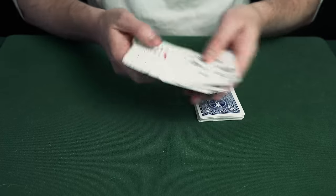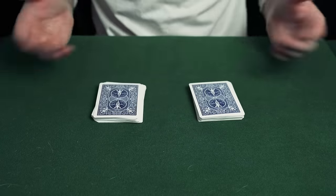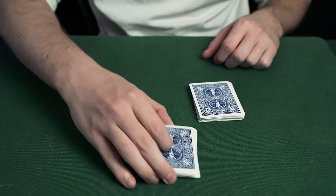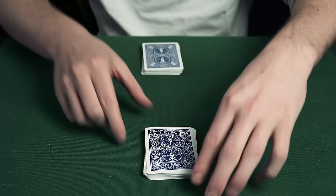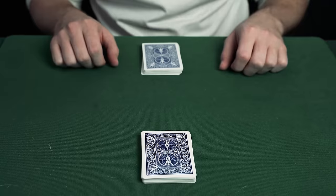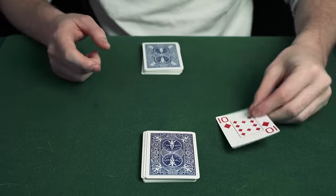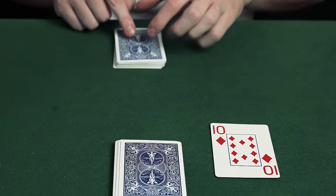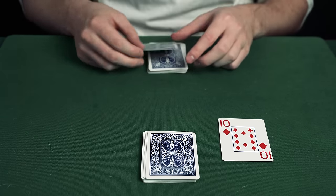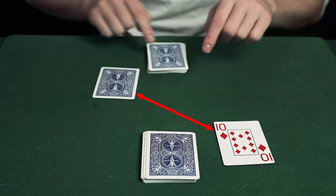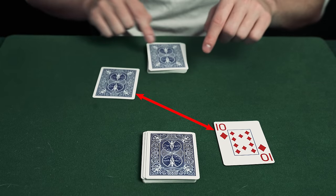The spectator then has a free choice to choose their pile. They pick one pile, leaving the magician with the other one. Here's what's going to happen. The spectator turns over a card and places it face up on the table. In this case it's a red card. The magician will take his top card from the shuffled pack and place it diagonal to the spectator's card.